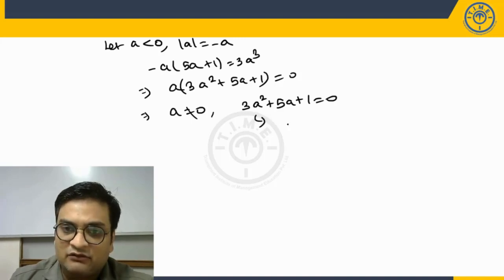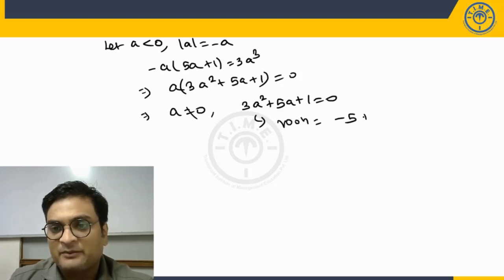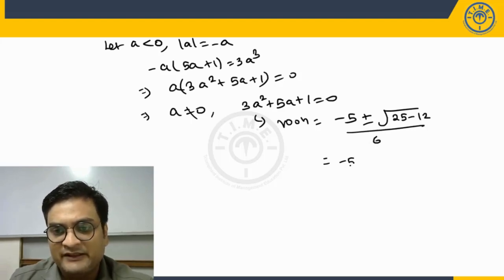So here, what are the roots that we get? Roots will be minus b plus or minus root over b square is 25 minus 4ac by 2a, which is minus 5 plus or minus root 13 by 6.